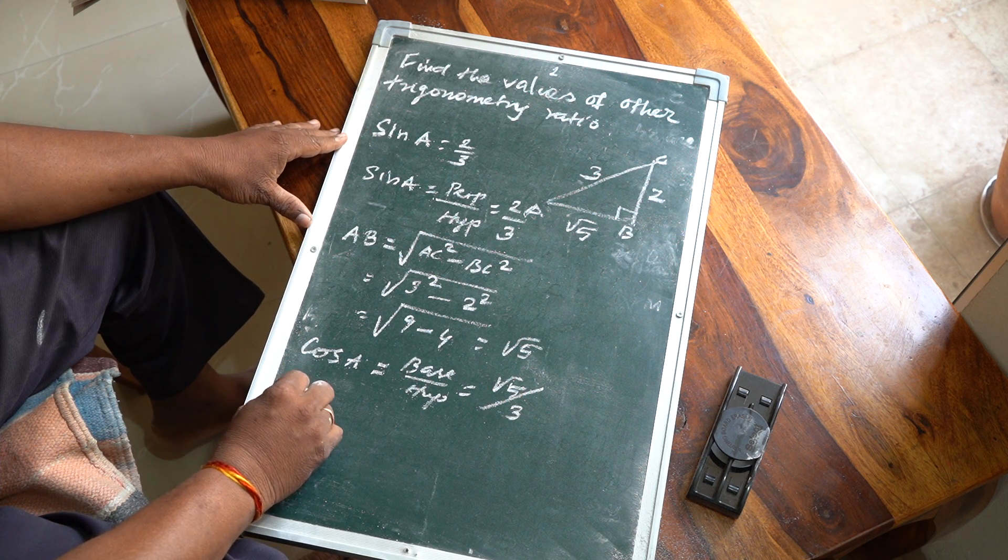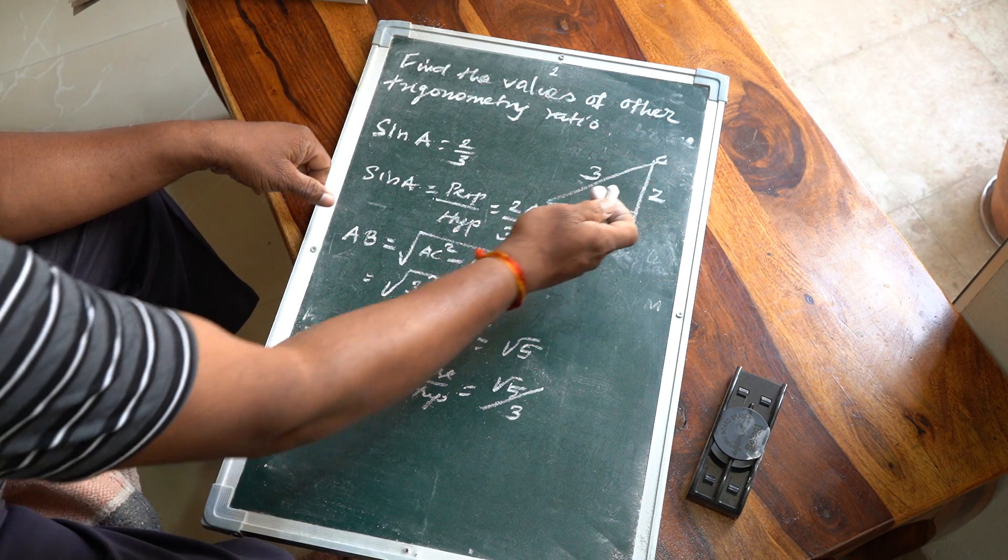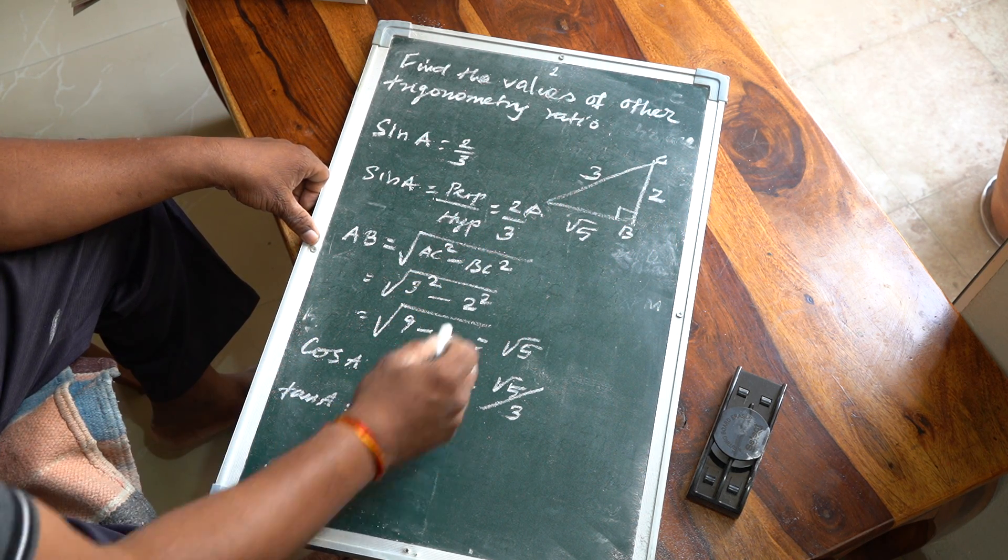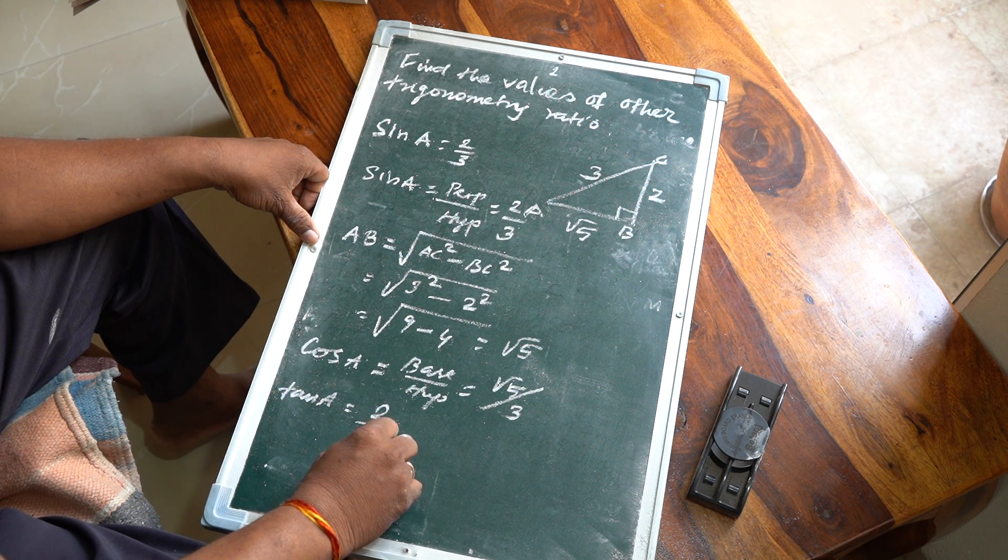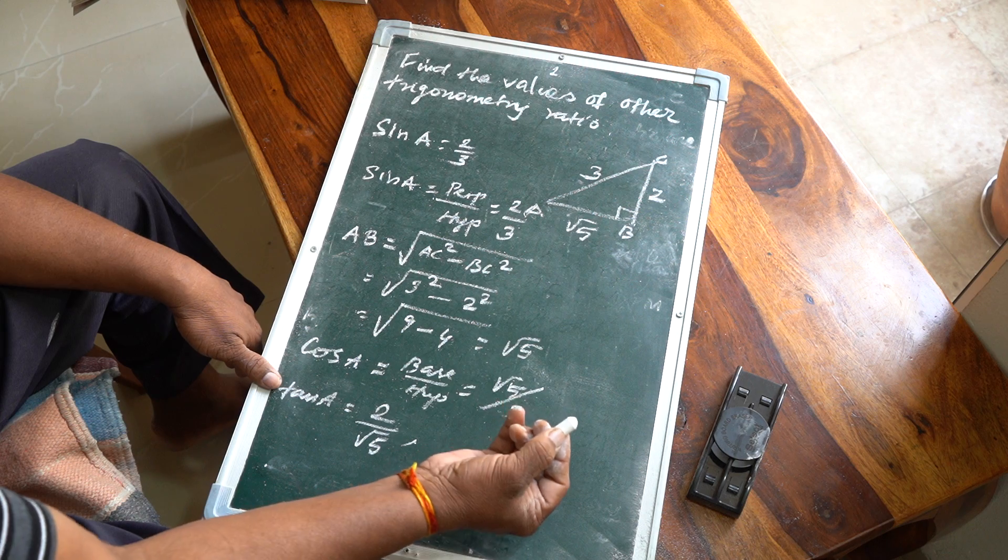Now what is tan A? Tan means perpendicular side by the base. Perpendicular is 2, base value is √5, so tan A = 2/√5.